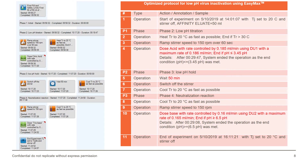The stirrer is ramped up once you have reached 20°C and the target stir speed. You then go into phase two of low pH addition, where citric acid is added to reach the low pH endpoint. Once the low pH endpoint is confirmed, you go into the pH hold, which is set at 50 minutes in this case.